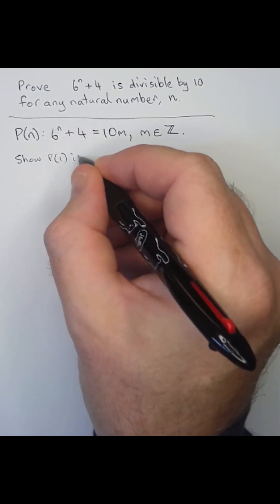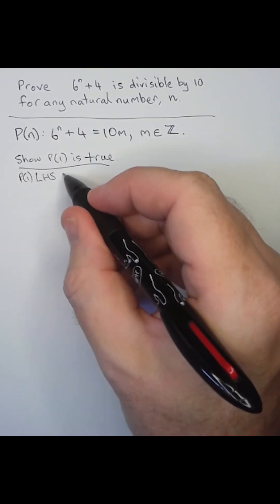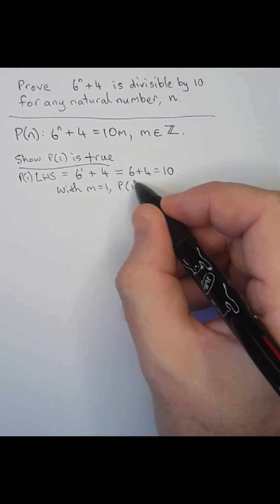To use mathematical induction, we need to show that this is true when n is equal to 1. When n is equal to 1, the left side will be equal to 10, which is of course divisible by 10.